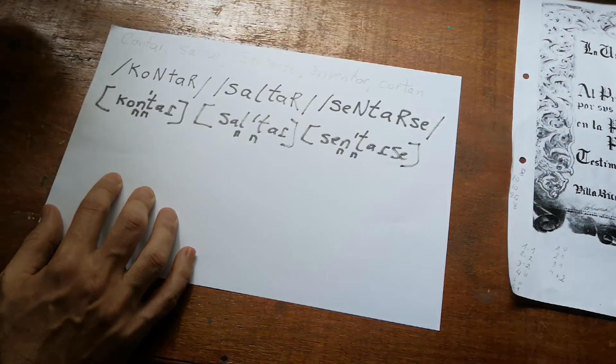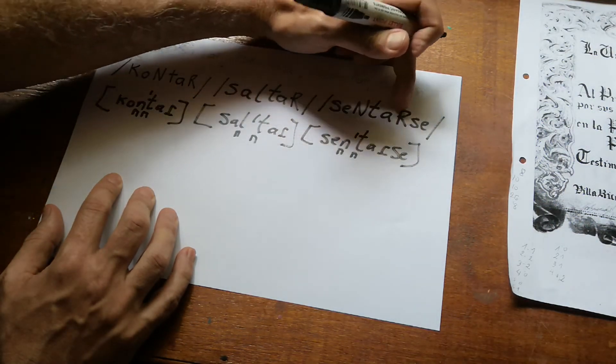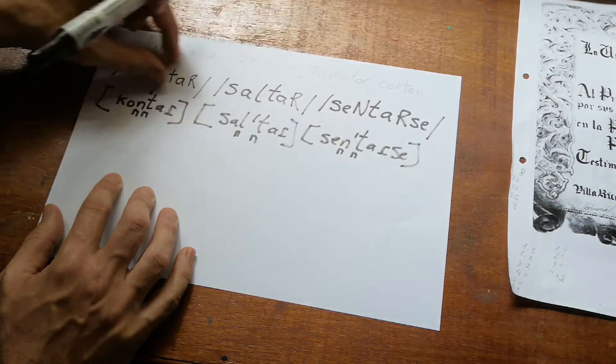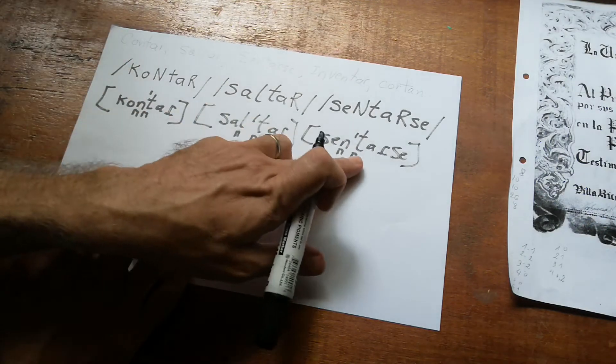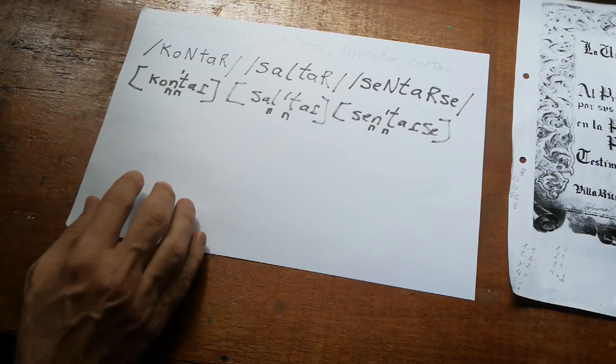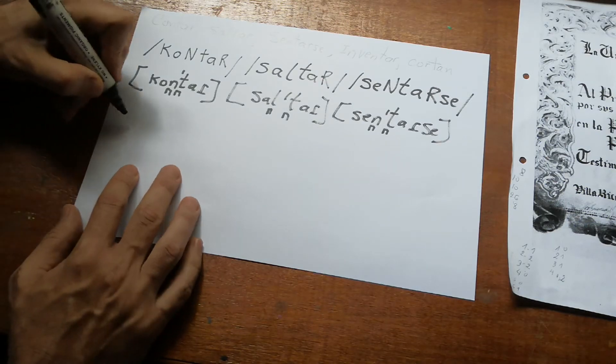As you can see, archiphonemes occur only in phonemic transcriptions, never in phonetic transcriptions. But I have two more examples for you: inventar.